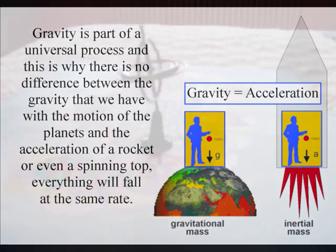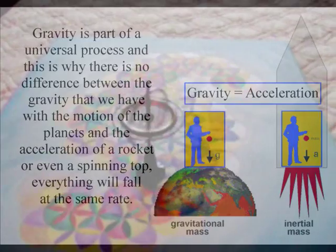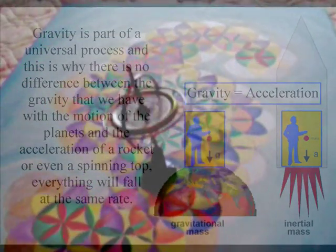Gravity is part of a universal process, and this is why there is no difference between the gravity that we have with the motion of the planets, and the acceleration of a rocket, or even a spinning top. Everything will fall at the same rate.